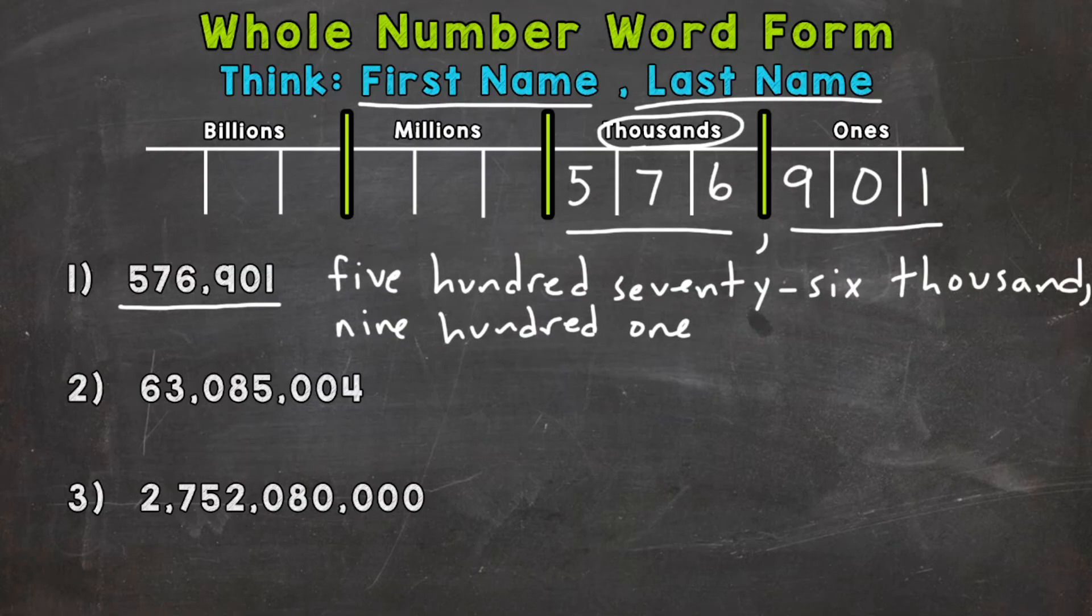All right. So on to number two, where we start with this section here. So think first name, last name. Read it as is. And we have a 63. Now, last name is the period in which that 63 is sitting, and it's sitting in the millions. So sixty-three million, comma.